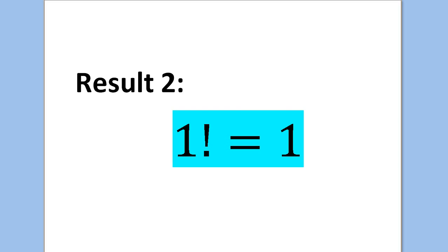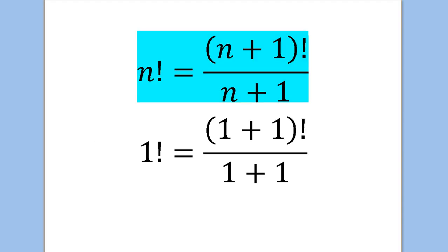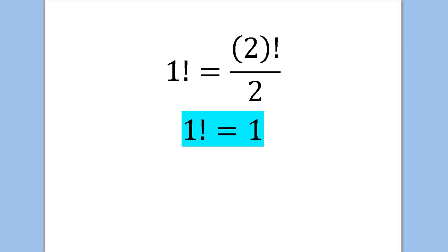Result 2: 1 factorial equals 1. This is a result you're going to have to memorize. We use Result 1 to complete this proof. We had that n factorial equals n plus 1 factorial over n plus 1. Plugging in n equals 1, we get 1 factorial equals 2 factorial over 2. That's obviously equal to 1 because 2 factorial is 2, and 2 divided by 2 is 1.